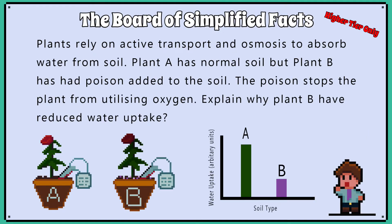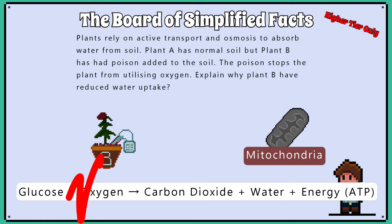For example, a question might show some data regarding water uptake by a plant in different conditions. You might be asked to explain why the rate of water uptake is lower when the plant has been poisoned and can no longer utilise oxygen. Because there is no oxygen, aerobic respiration cannot take place.